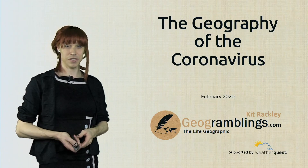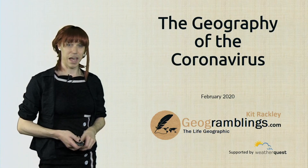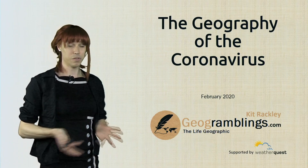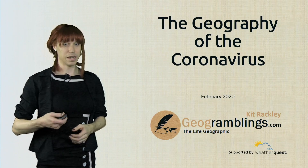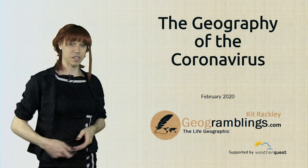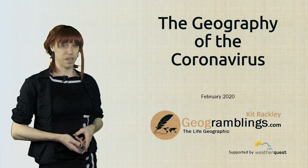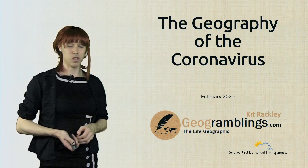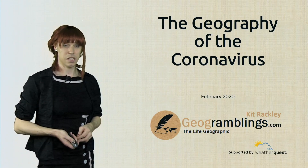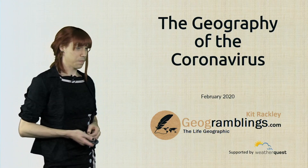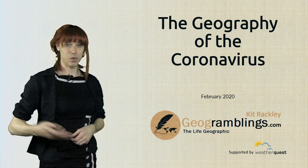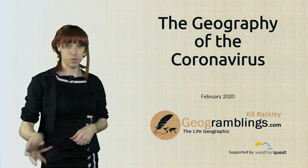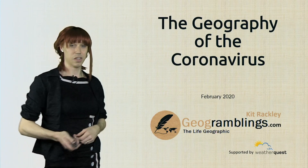Hello and welcome to this second Jog Ramblings blog video. For February we're going to be looking at the geography of the coronavirus, which is all over the news. As I make this recording on the 25th of February, there's even been some news this morning regarding whether they may have synthesized a vaccine or are close to human trials. Hopefully this video will stand the test of time because we're going to look at the geographical picture of the coronavirus.